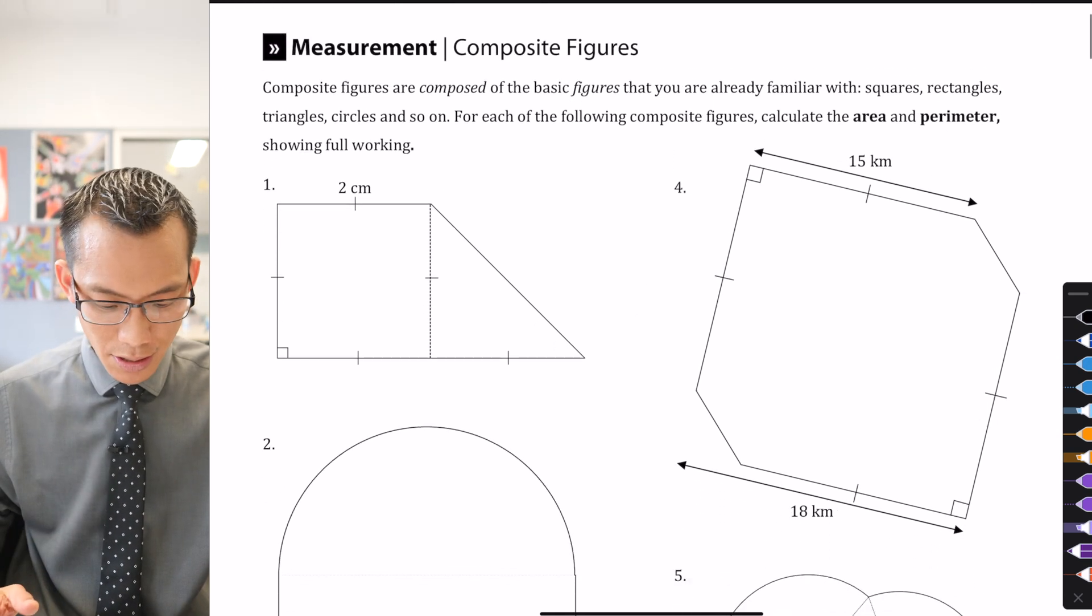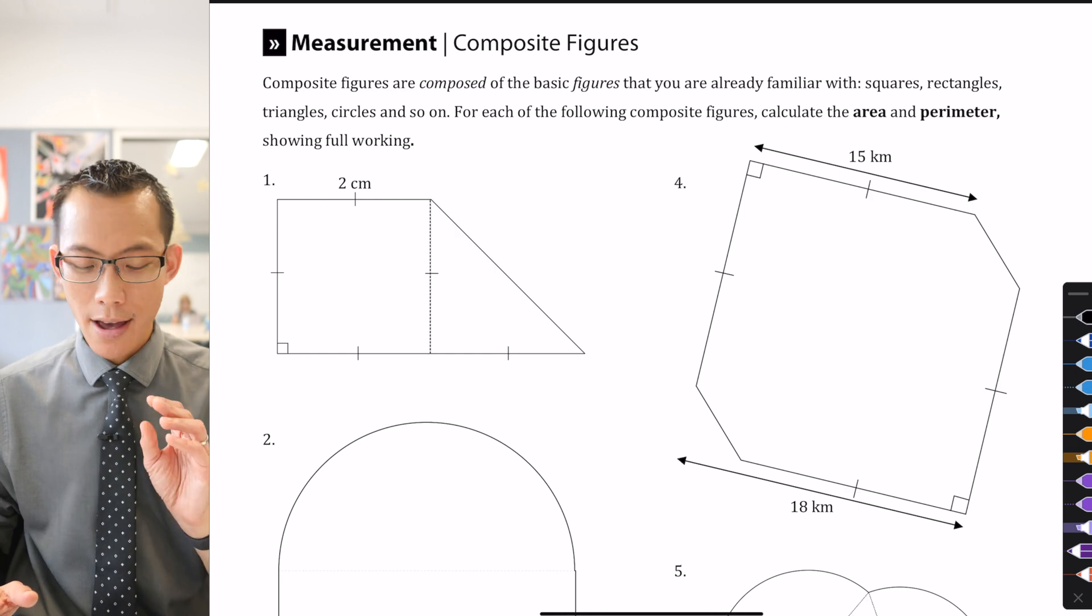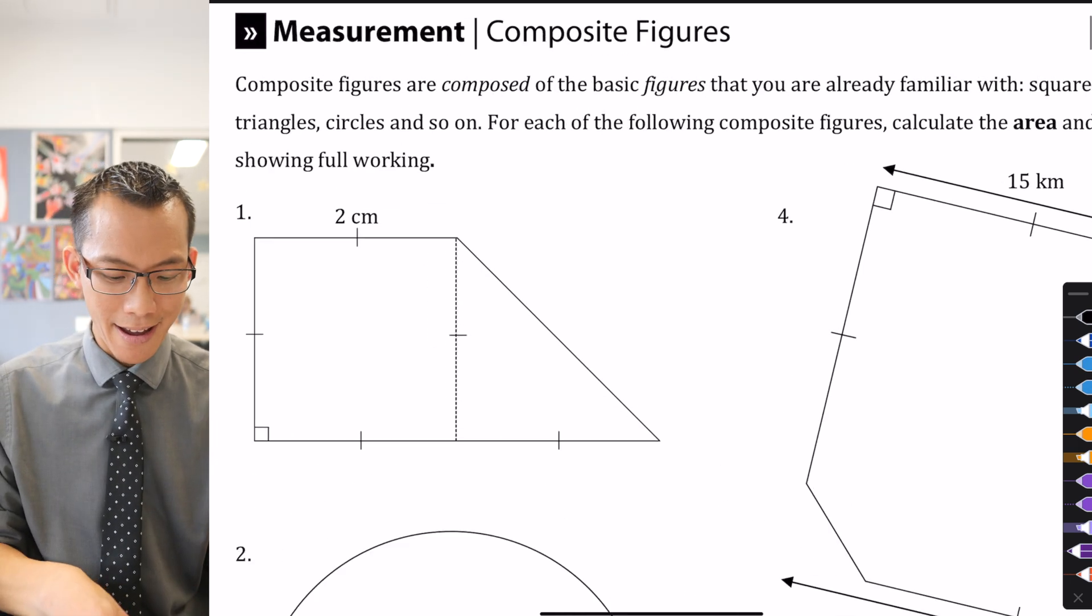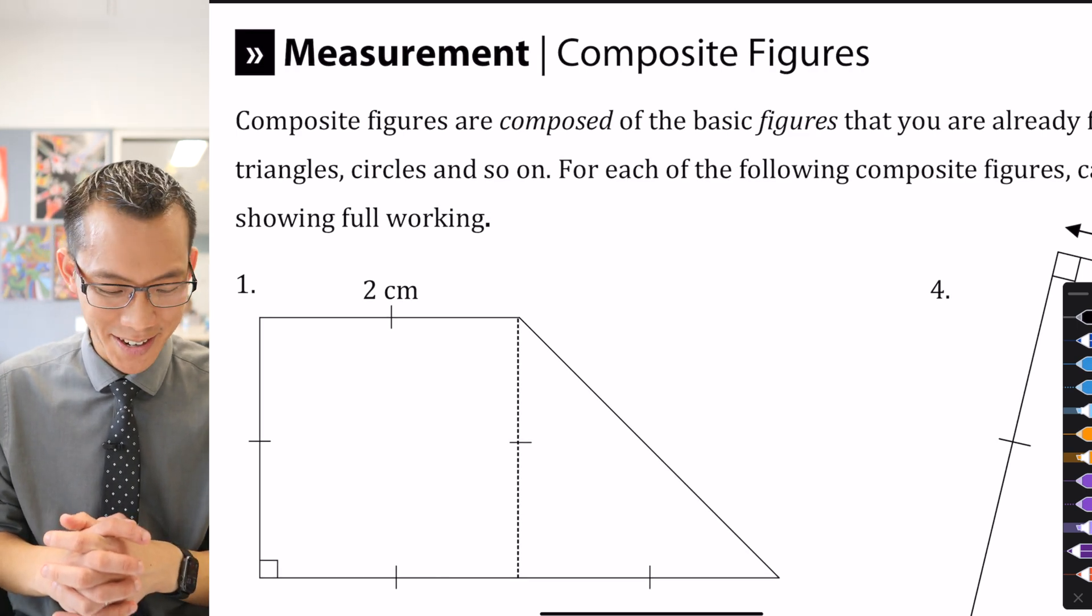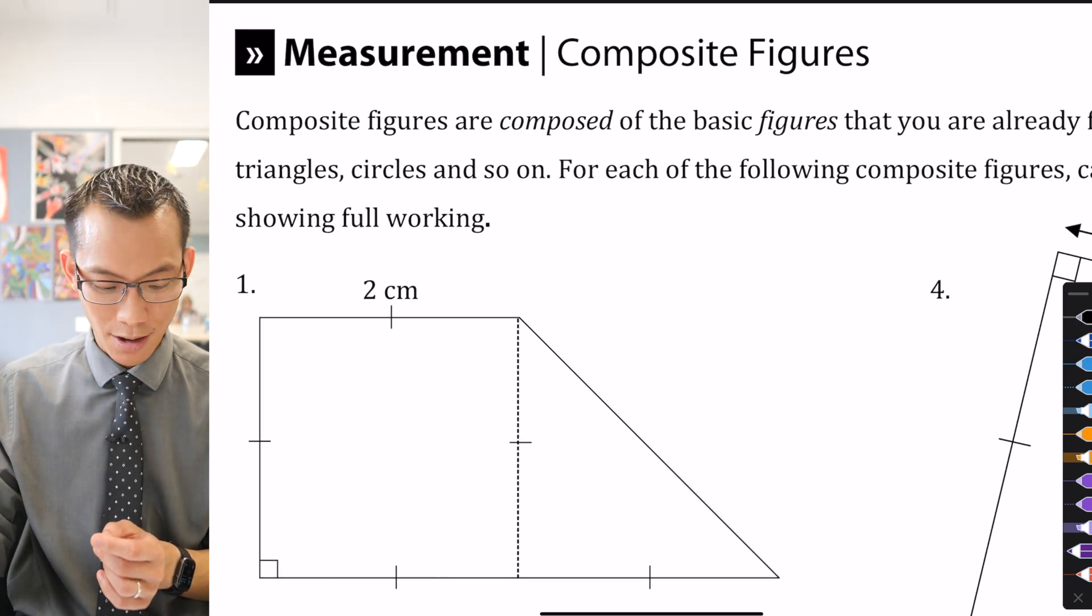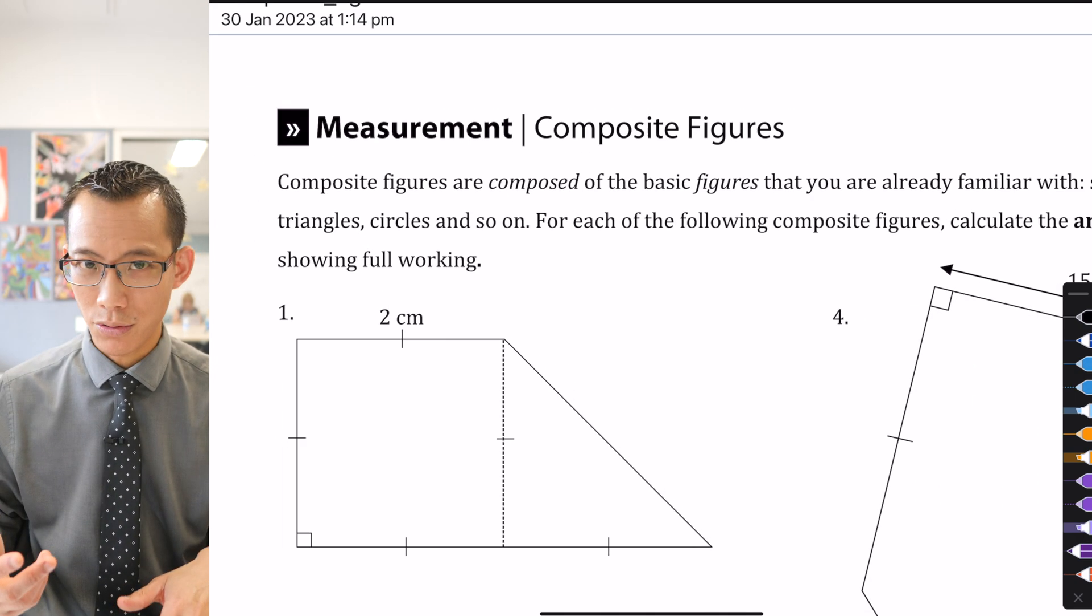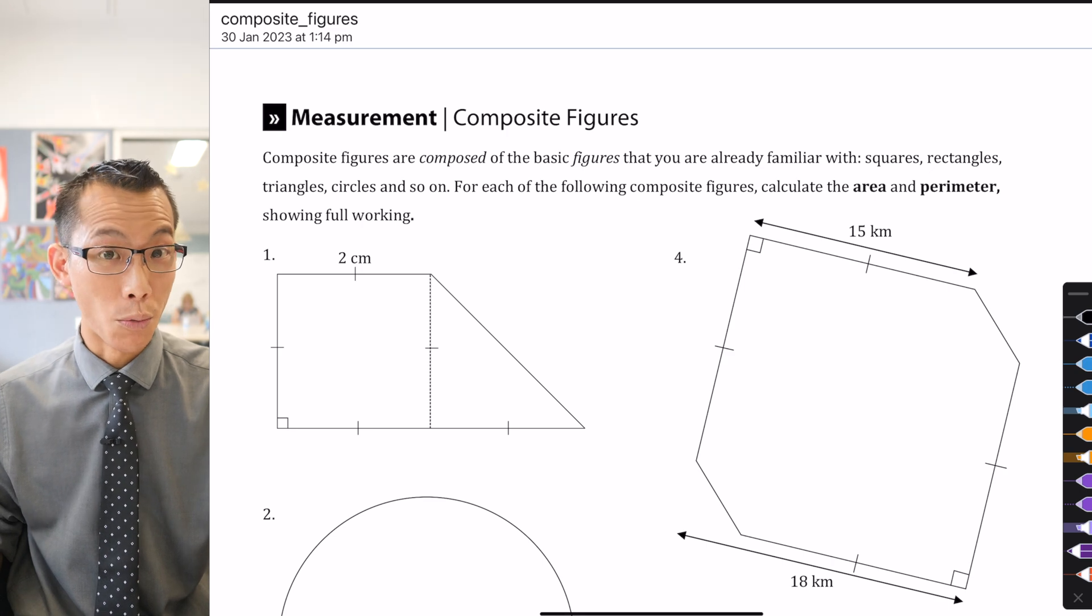So we'll encounter those questions as we go. There are six questions on this sheet and they're all about area and perimeter for composite figures. And as I so helpfully wrote more than 10 years ago, composite figures are composed, that's the composite part, of the basic figures. So you know triangles, circles, squares, rectangles and all the rest.